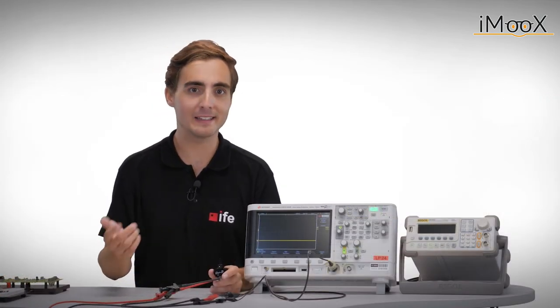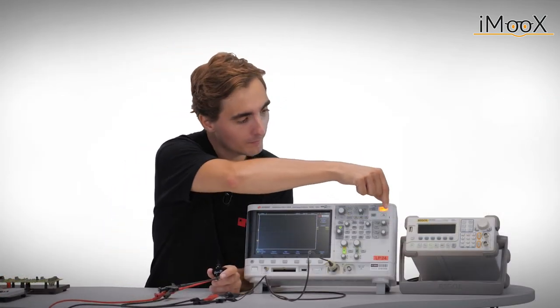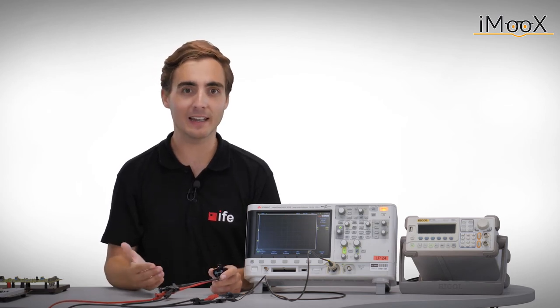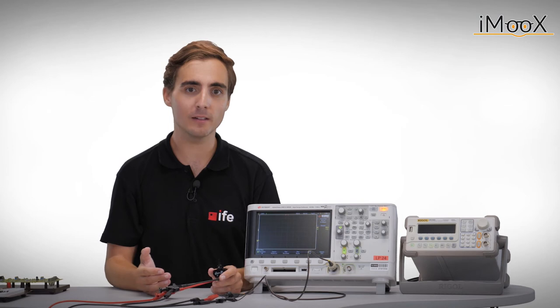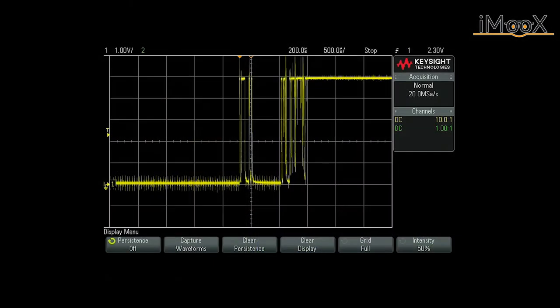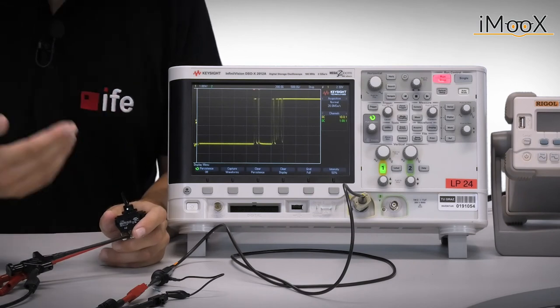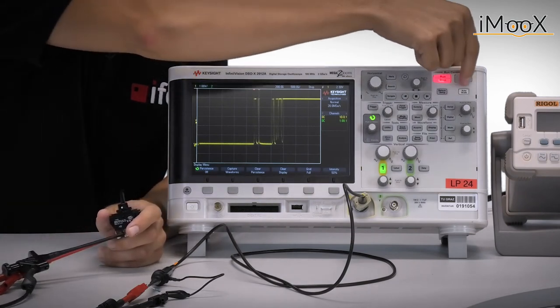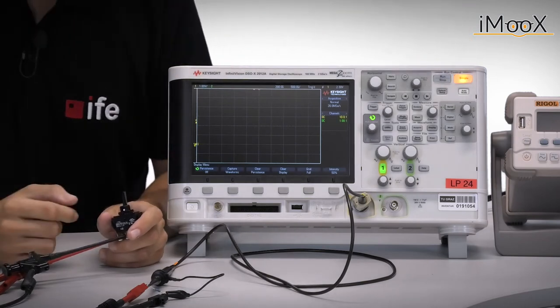Therefore, we have to push the single shot button. As the name implies, this only performs a single capture at the first trigger event and keeps the data so that it can be observed. We can see the contact bounce as we have expected it to be. If we want to observe another switching event, we have to enable the next shot by pressing the single shot button again.